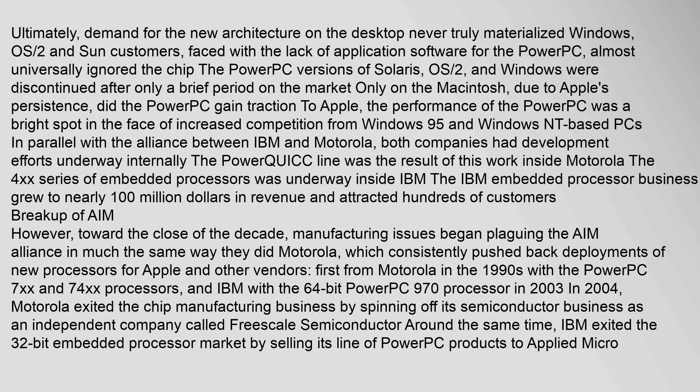Ultimately, demand for the new architecture on the desktop never truly materialized. Windows, OS/2, and Solaris customers, faced with the lack of application software for the PowerPC, almost universally ignored the chip. The PowerPC versions of Solaris, OS/2, and Windows were discontinued after only a brief period on the market. Only on the Macintosh, due to Apple's persistence, did the PowerPC gain traction. To Apple, the performance of the PowerPC was a bright spot in the face of increased competition from Windows 95 and Windows NT-based PCs.